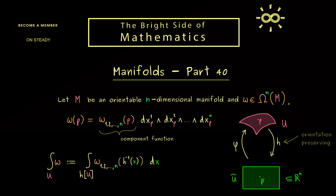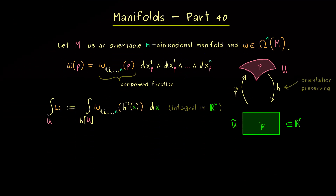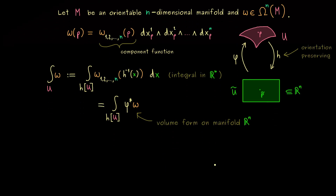That is the definition from the last video. Now the question is: is this even well defined? We should ask what happens if we go to another chart defined on u. To answer that, we introduce a short notation for the right-hand side — namely, this will be the integral of the volume form phi star omega. Indeed, this is now a volume form defined on R^n, and for these volume forms we have already discussed what it means to integrate them.